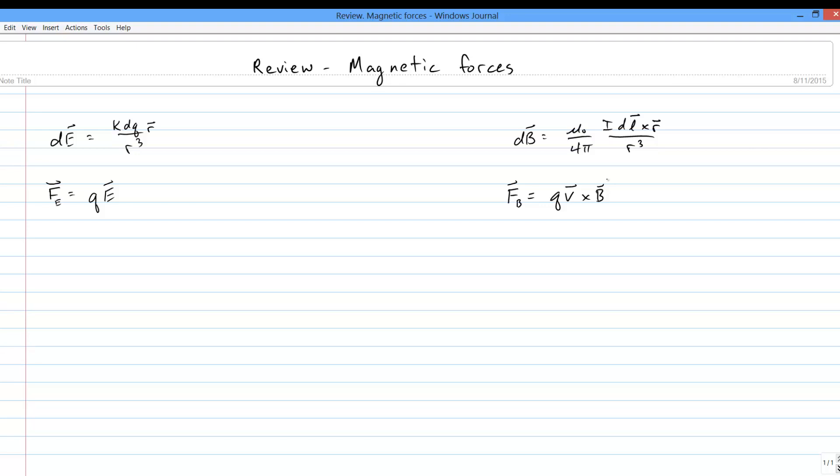Some highlights. First, the force on a point charge is always zero if the charge is stationary. Only moving point charges feel magnetic forces. Second, since the cross product of parallel vectors is zero, charges moving along the direction of magnetic field lines feel no force.